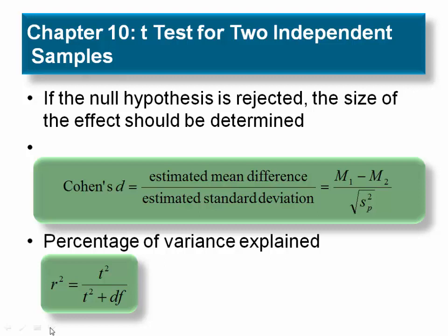We again use Cohen's D and R-squared as measures of effect size. The notation in the denominator of the Cohen's D formula requires a bit of explanation. Recall that in the previous formulas we used to compute Cohen's D, either the population or sample standard deviation was the value in the denominator.